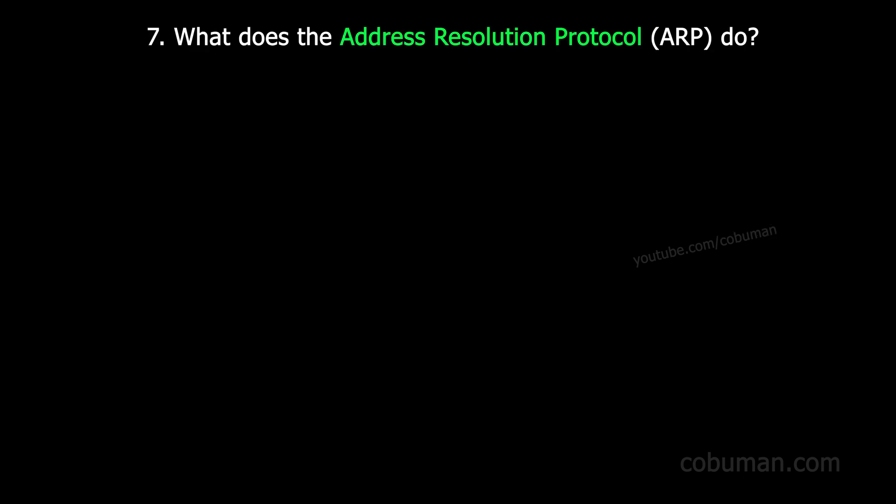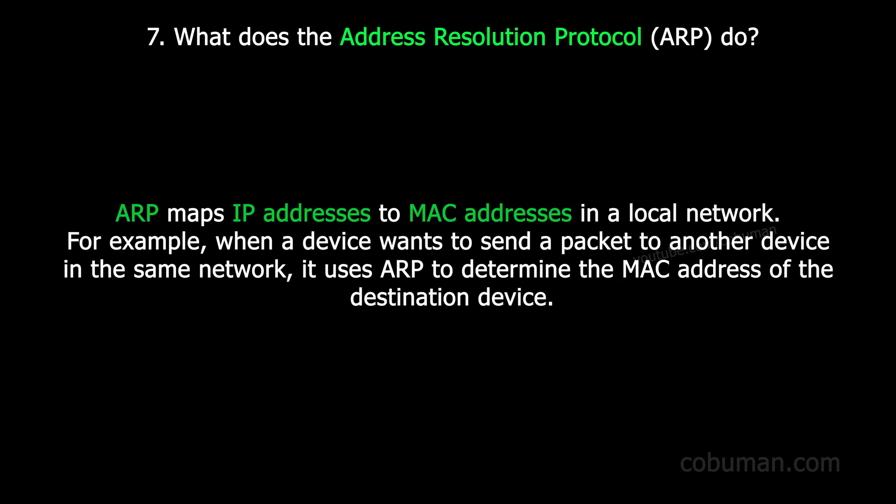Question number seven: what does Address Resolution Protocol do? ARP maps IP addresses to MAC addresses in a local network. For example, when a device wants to send a packet to another device in the same network, it uses ARP to determine the MAC address of the destination device.